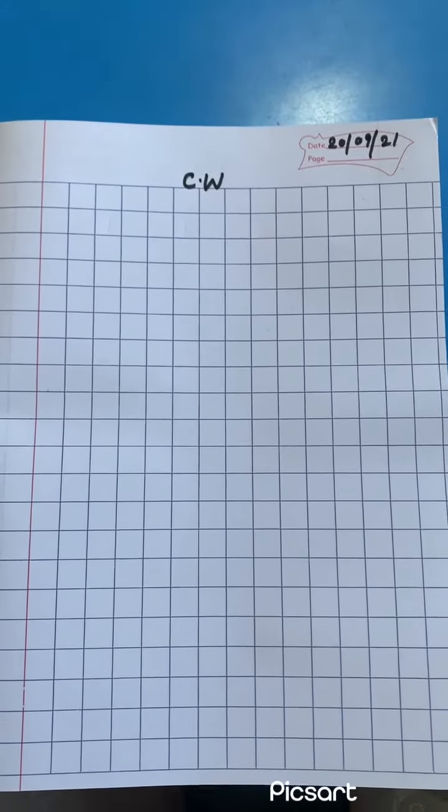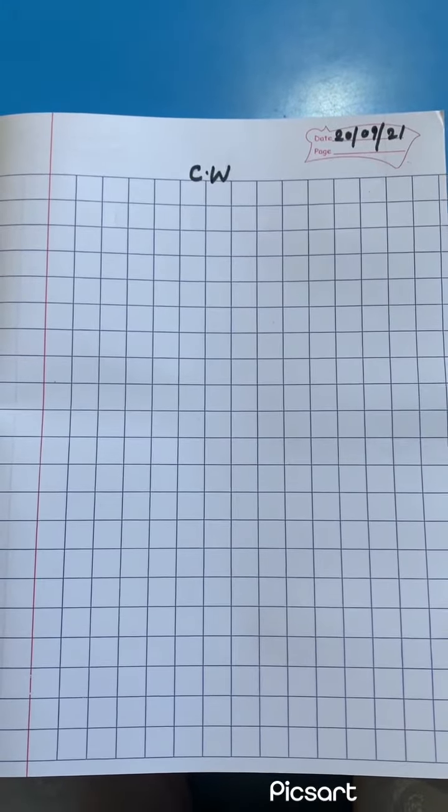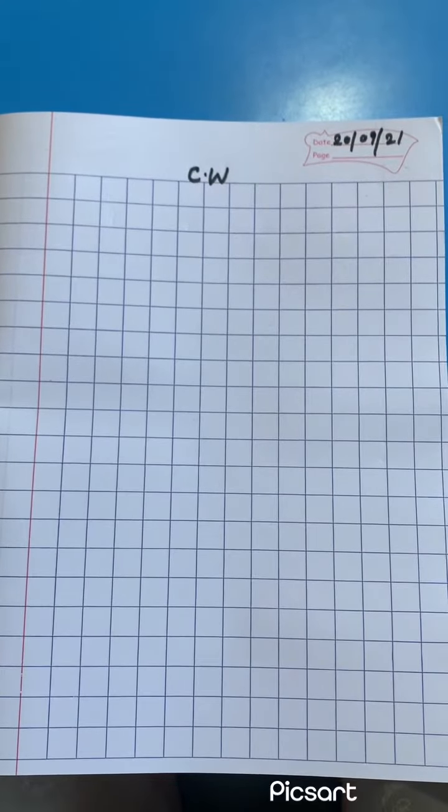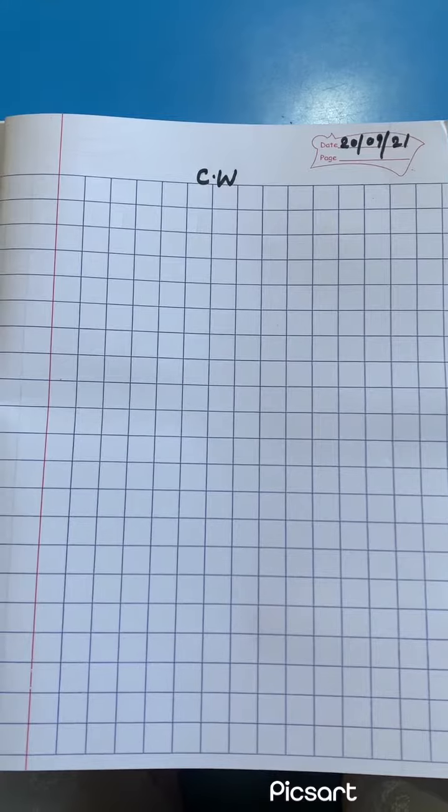Good morning kids, how are you? Today we have our math class and we are going to do sequence writing from number 31 to 40.